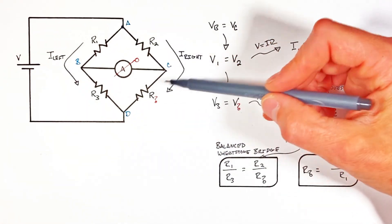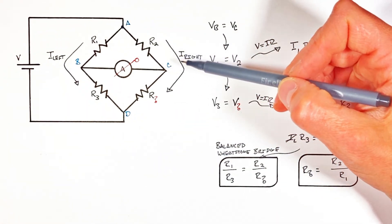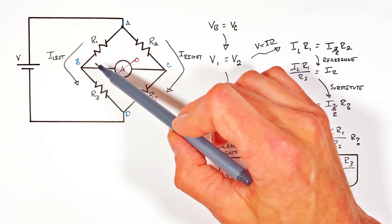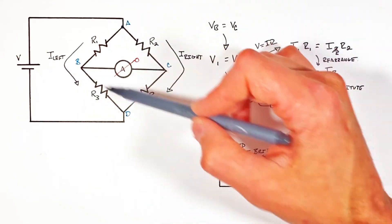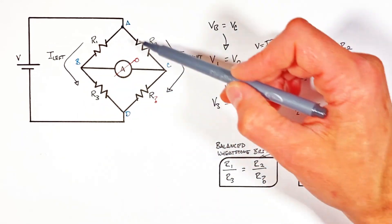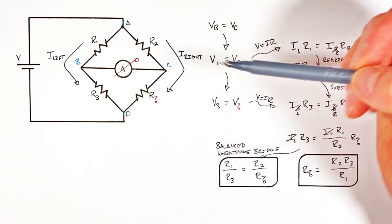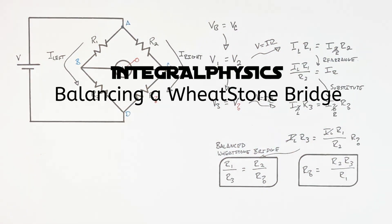Now there's quite a few different variations on a Wheatstone bridge, so stick around and I'll show you what happens when we do something like put a voltmeter in here and create unbalanced situations or conditions within a Wheatstone bridge. But on that note, that's all for now.